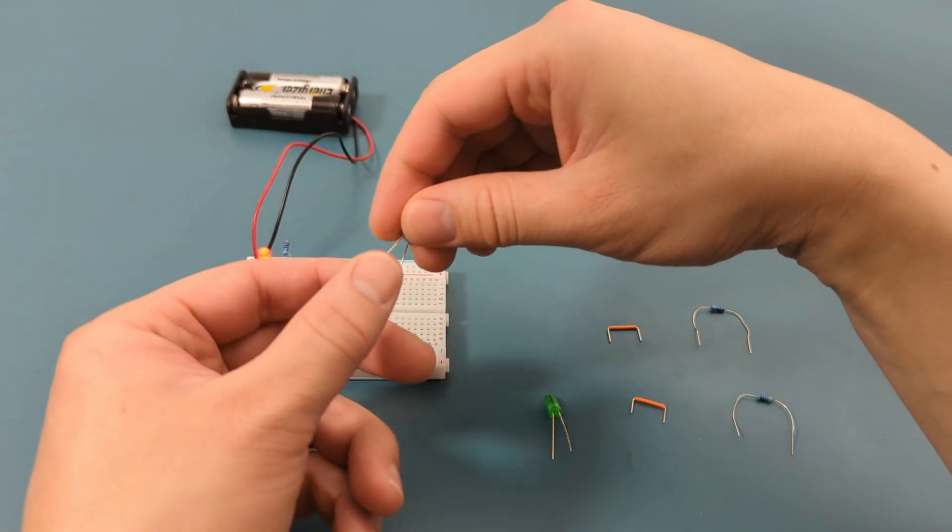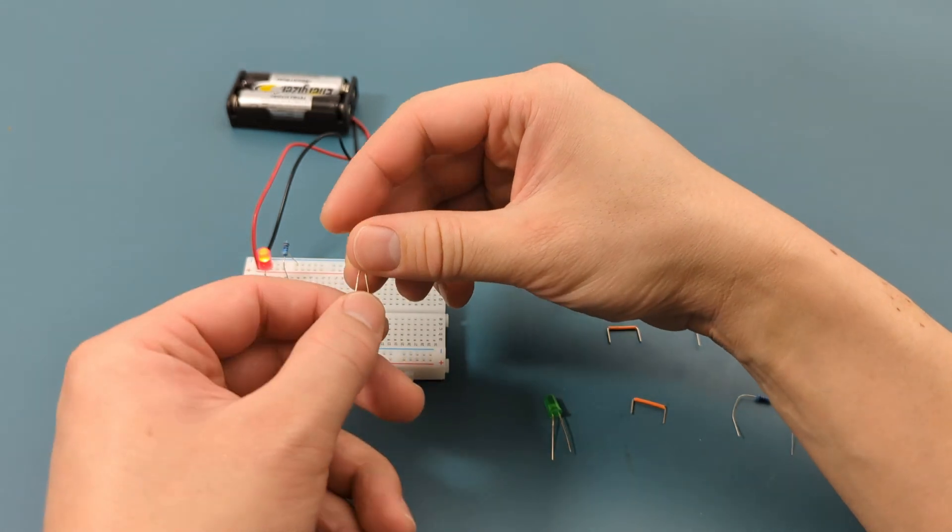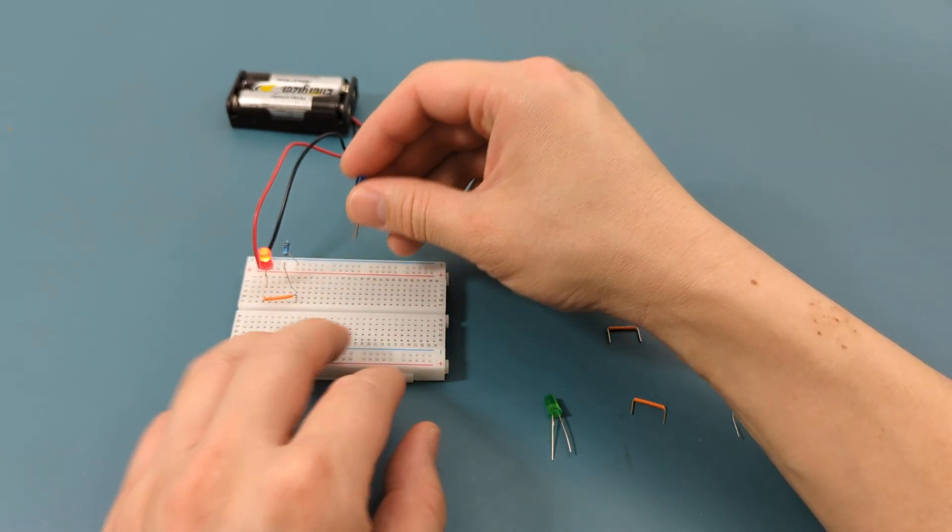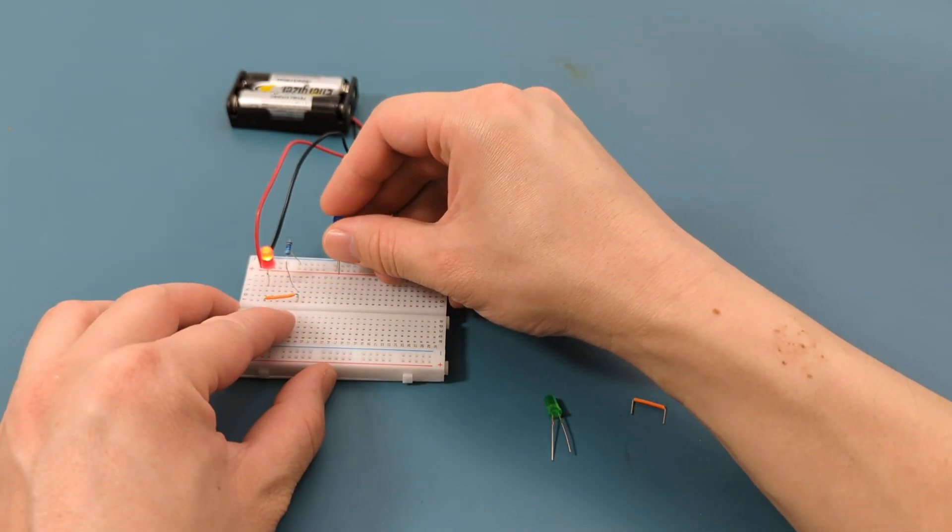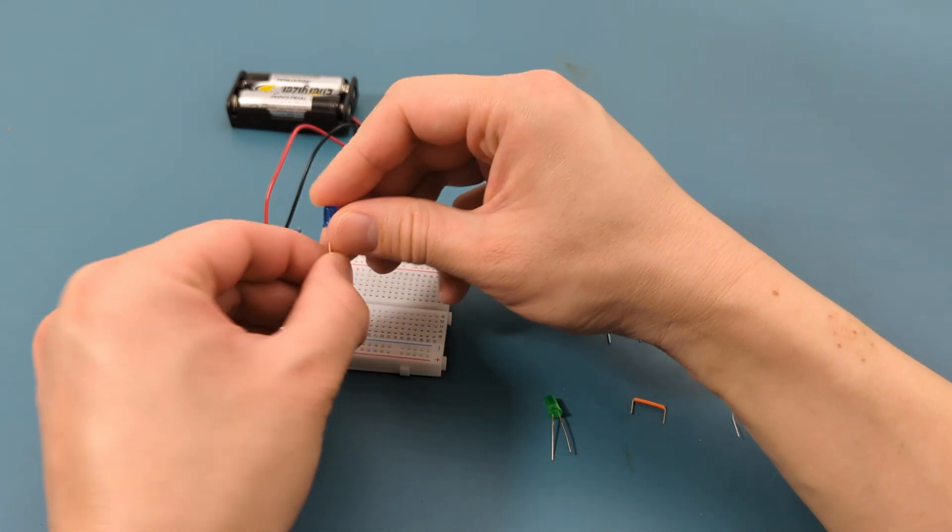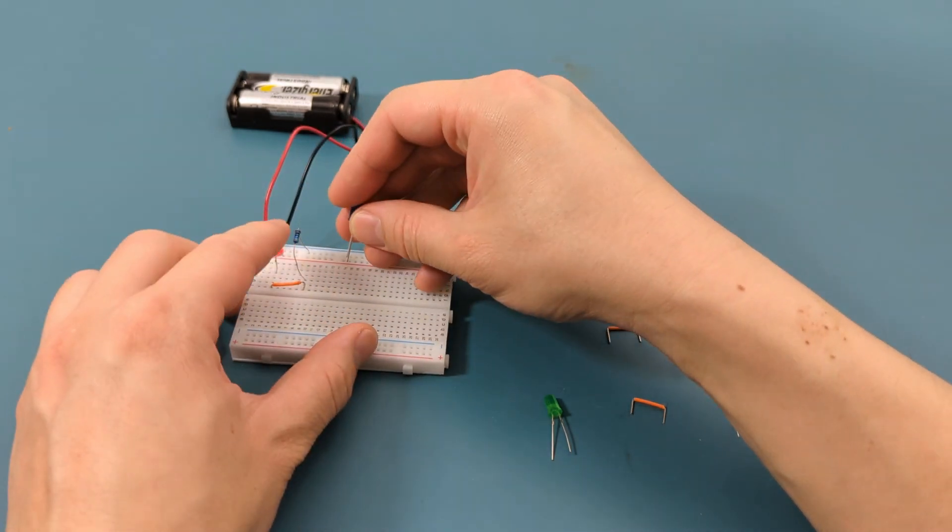Let's continue this same process for the blue LED. Since we have placed the breadboard horizontally, it may take some time for you to get adjusted to the orientation of the power rails.